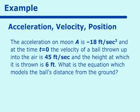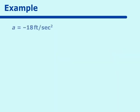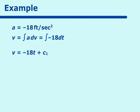The acceleration is equal to negative 18 feet per second squared, and the antiderivative of acceleration is velocity. So velocity equals the integral of the acceleration — the integral of negative 18 — giving us V equals negative 18T plus a constant C1. Using the initial condition that when T equals 0 the velocity is 45, we find C1 equals 45. So velocity equals negative 18T plus 45.